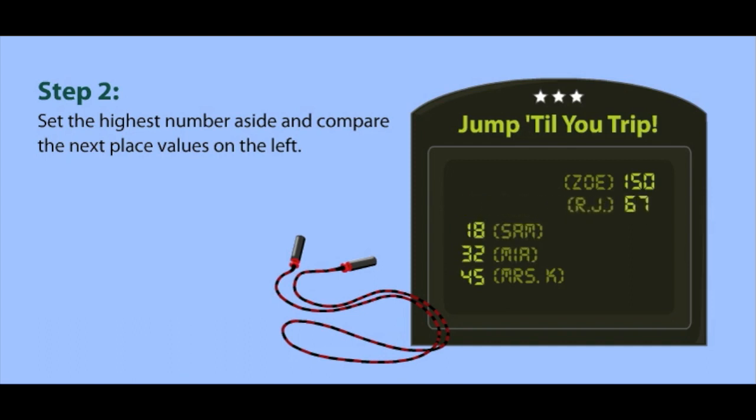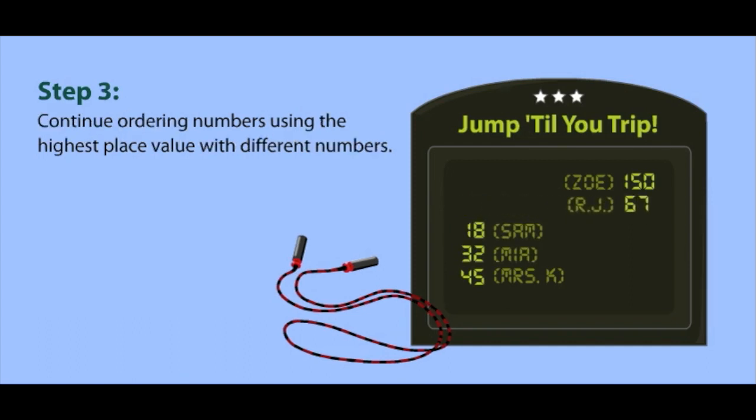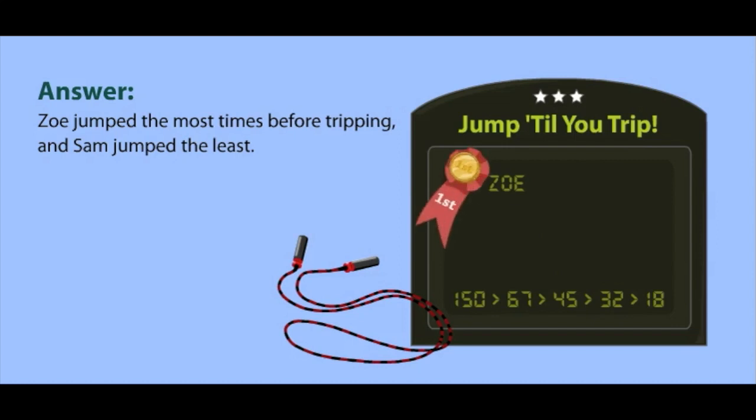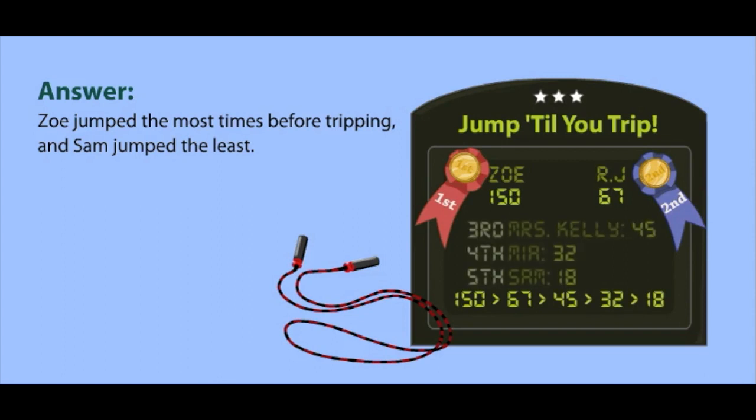Now let's get the rest of these numbers in order. So we're still looking at the tens place to order the last three numbers. Since 4 is bigger than 3, and 3 is bigger than 1, that makes the rest of the order 45, then 32, then 18. So we know that Zoe won the prize with 150 jumps, and RJ came in second. I guess jump roping isn't my thing. Even Mrs. Kelly beat me.